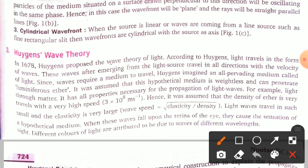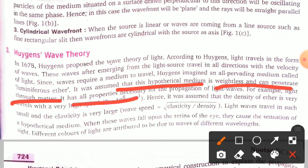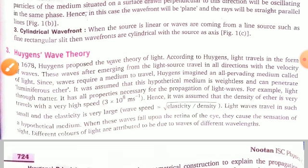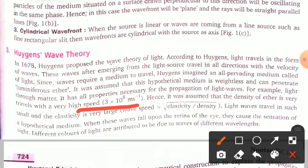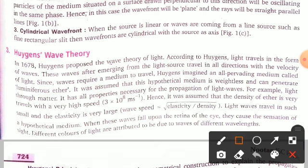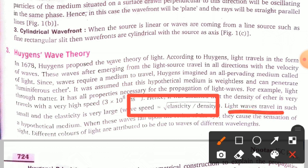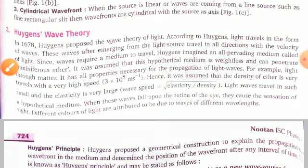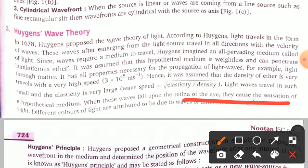This hypothetical ether medium is weightless and can penetrate through matter. It has all the properties necessary for the propagation of light waves. Since light travels at c = 3 × 10⁸ m/s, the density of ether was assumed to be very small and its elasticity very large. Wave speed equals the square root of elasticity divided by density. When these waves fall upon the retina of the eyes, they cause the sensation of sight.